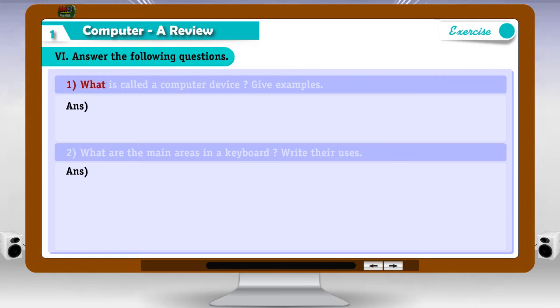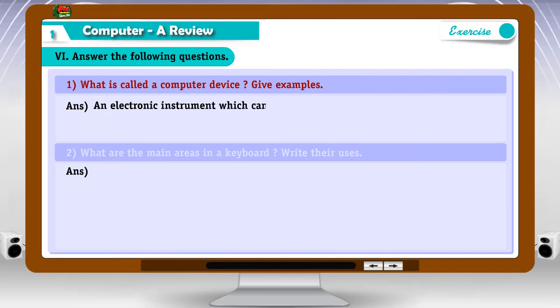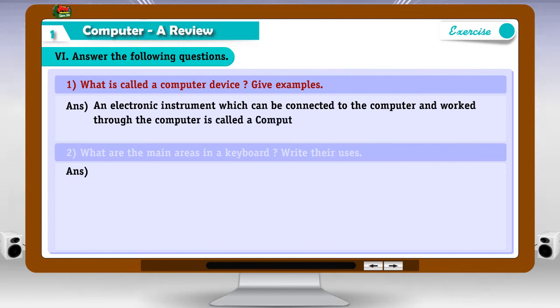1. What is called a computer device? Give examples. Answer. An electronic instrument which can be connected to the computer and work through the computer is called a computer device.